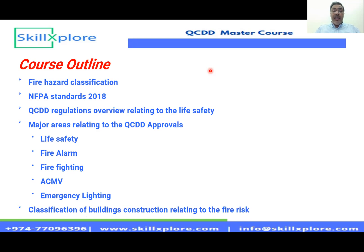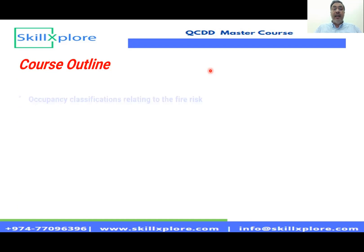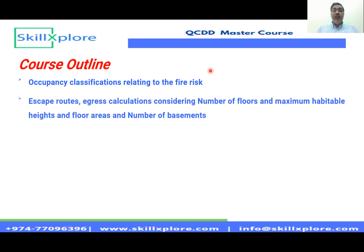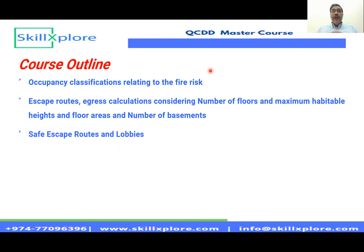We will talk about the classification of buildings and how they are classified depending on the construction type and fire risk. This includes occupancy classification related to fire lanes, life safety items such as escape routes and egress — how they are calculated, the maximum habitable area and building height, escape routes, firefighting lift lobbies, and the regulations for each type of occupancy.